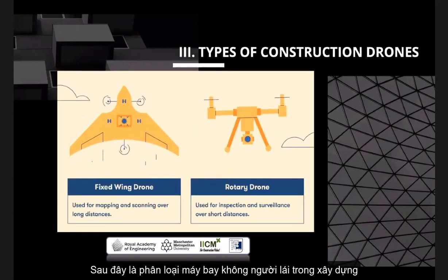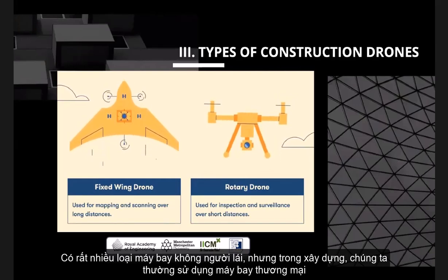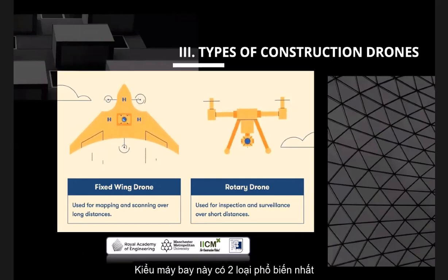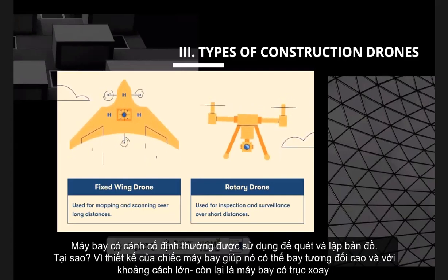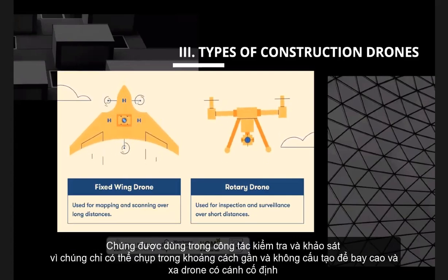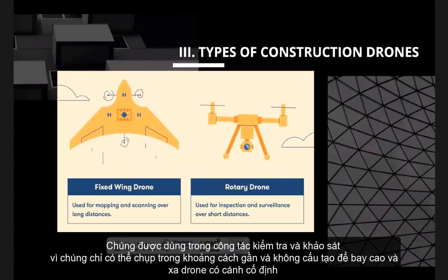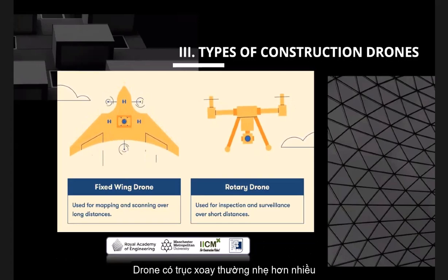We have types of construction drones. There are various types of drones, but in construction we are using commercial drones. In commercial drones, there are two popular types: fixed wing drone and rotary drone. Fixed wing drones are used for mapping and scanning because they can travel really long distances due to their design. The other is rotary drones, which are used for inspection or surveying because they operate at shorter distances. Rotary drones are more lightweight compared to fixed wing drones.